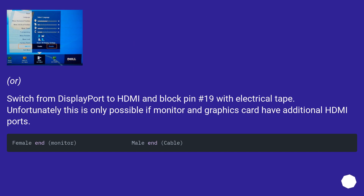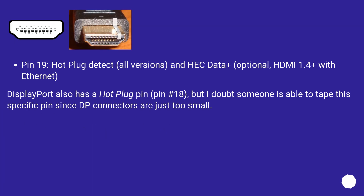Switch from DisplayPort to HDMI and block pin 19 with electrical tape. Unfortunately, this is only possible if the monitor and graphics card have additional HDMI ports. Pin 19 is the hot plug detect pin, used in all HDMI versions and optionally in HDMI 1.4 with Ethernet. DisplayPort also has a hot plug pin (pin 18), but taping that specific pin is likely impractical since DisplayPort connectors are too small.